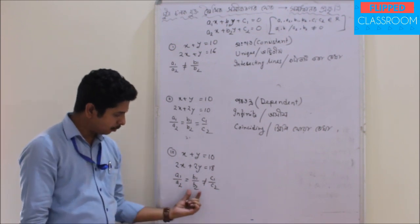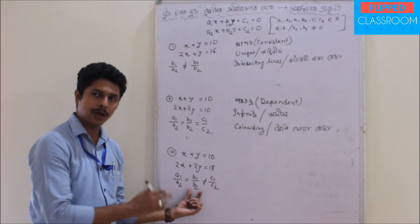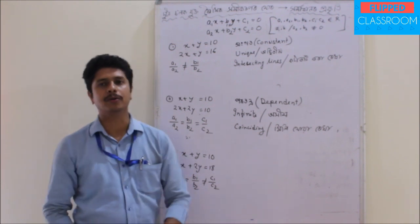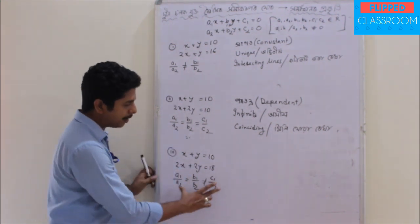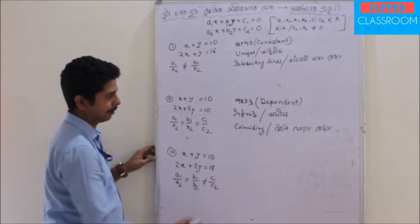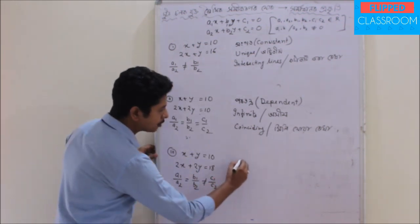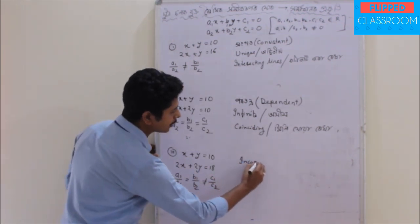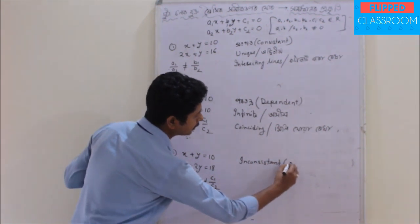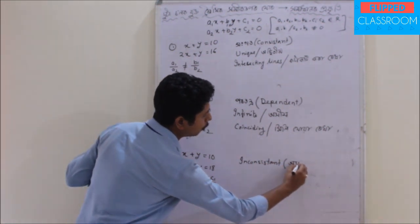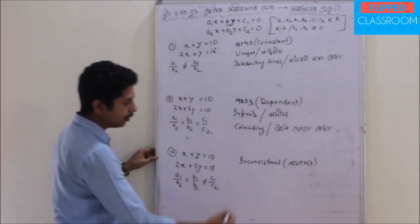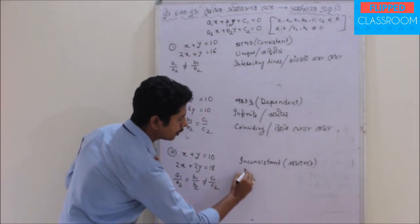Here a1 by a2 and b1 by b2 are equal, but c1 by c2 is equal to 8 — which is different. So this system is inconsistent. This is inconsistent, meaning it is not consistent and has no solution.